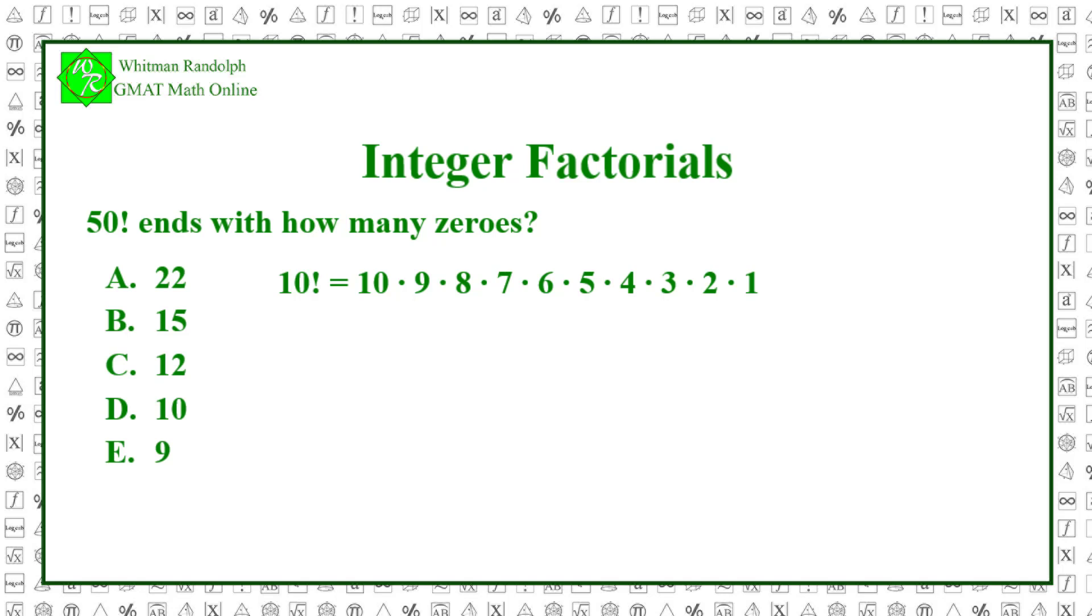A zero occurs at the end of a number whenever it's multiplied by 10, or in other words by a 5 and a 2.